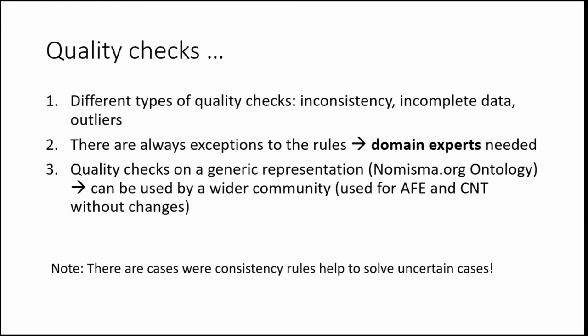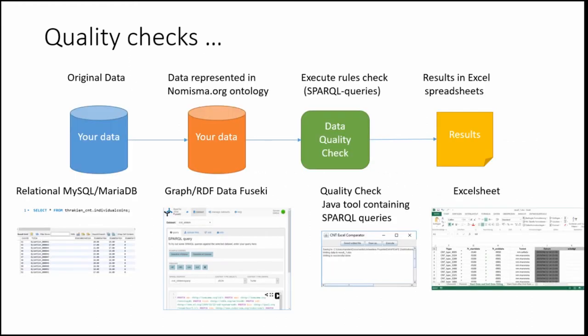Carsten started looking at how this check could be done — for our database Antike Münzen in Europa and a different project from the Academy in Berlin, Corpus Nummorum Thracorum, the corpus of ancient coins from Thrace. The way he did it: he starts with data in a relational MySQL database, maps it to RDF, runs a SPARQL query over the RDF, and produces results — I have to say — in an Excel spreadsheet.